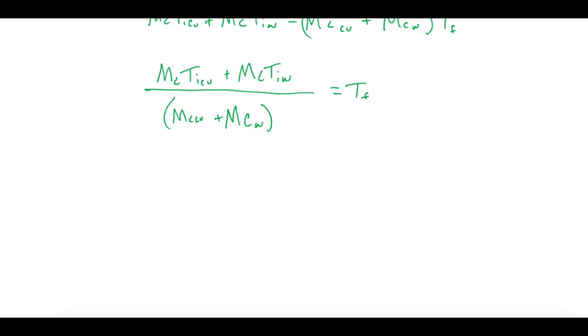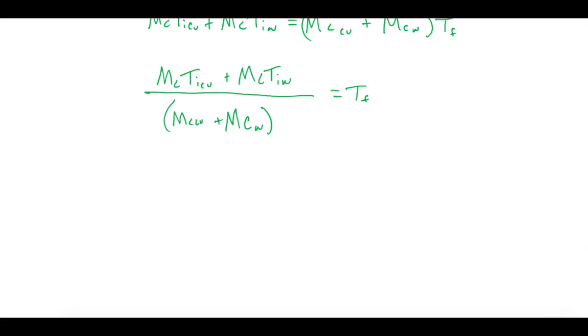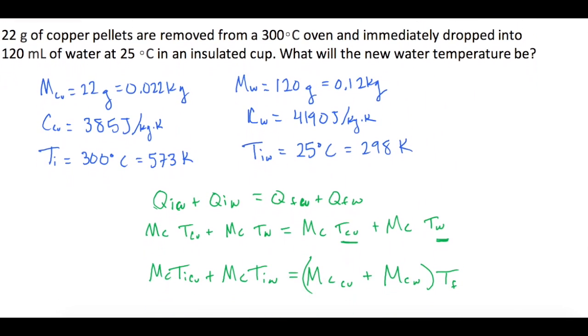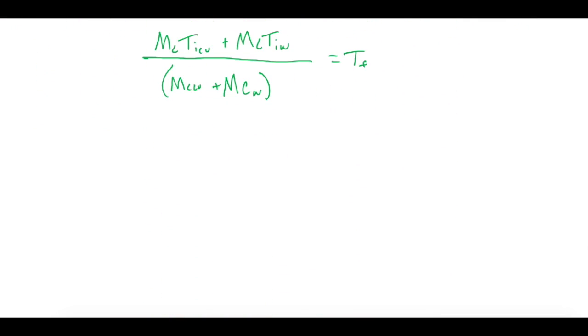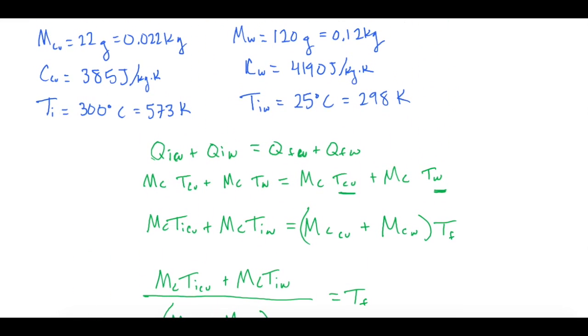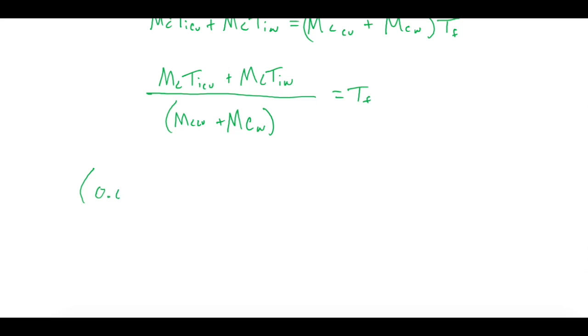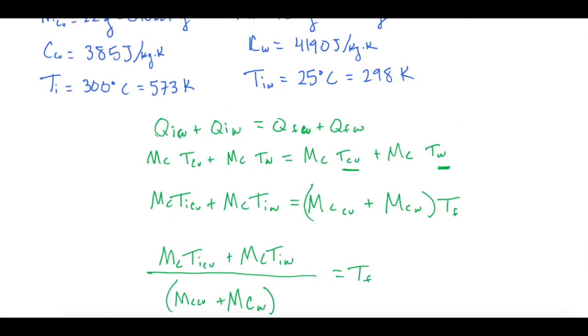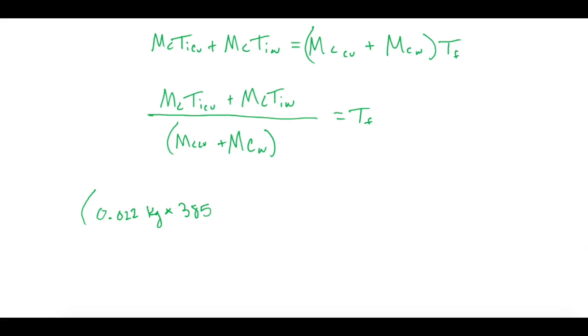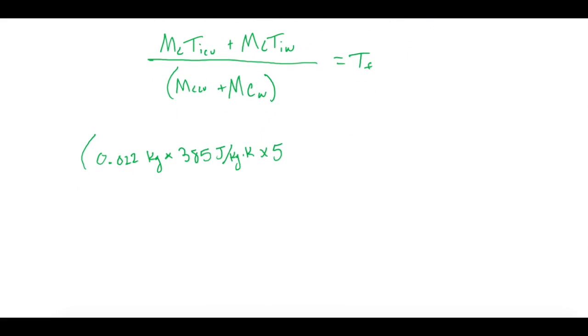Let's scroll down and plug in all of our values. The mass of copper, which we said was 0.022 kilograms, times the specific heat, which was 385 joules per kilogram kelvin, times 573 kelvin.